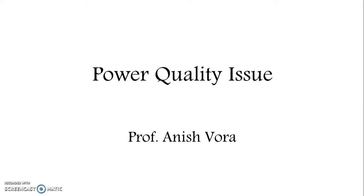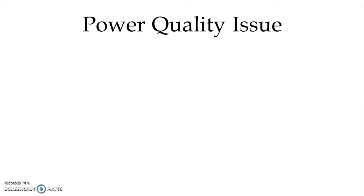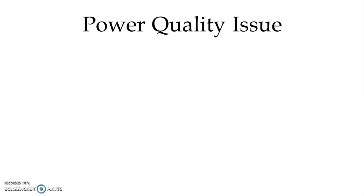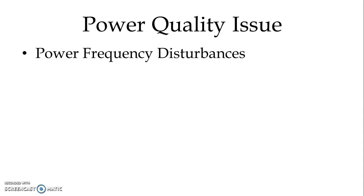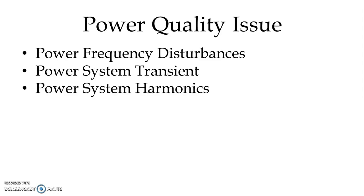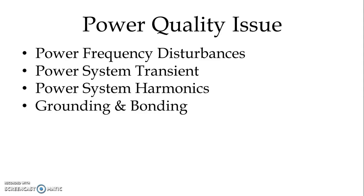If we see the classification of power quality issues, the classification can be done as shown in the figure. It can be listed as: power frequency disturbances, power system transients, power system harmonics, and grounding and bonding.